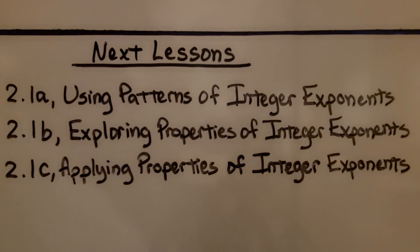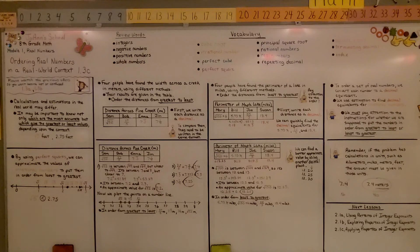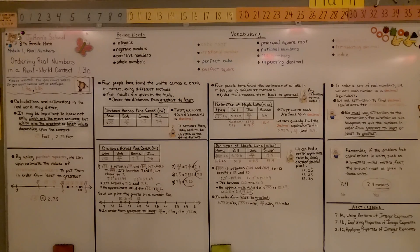Now we're finished with lesson 1.3, and we're going to be moving on to 2.1, split into three parts. The first part is using patterns of integer exponents. Remember to use perfect squares to help approximate values of irrational numbers. And remember, to better approximate a value, add another decimal place, like hundredths or thousandths. I hope you understand everything so far, and I hope you're doing well. And I also hope you join me for the next lessons. Bye!